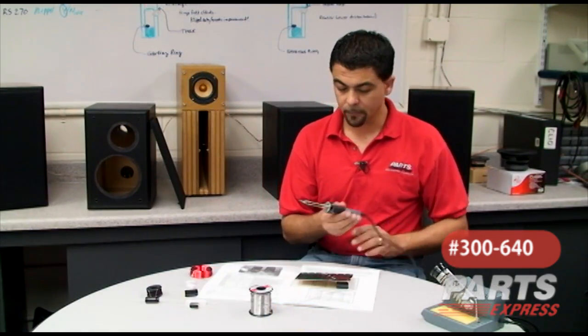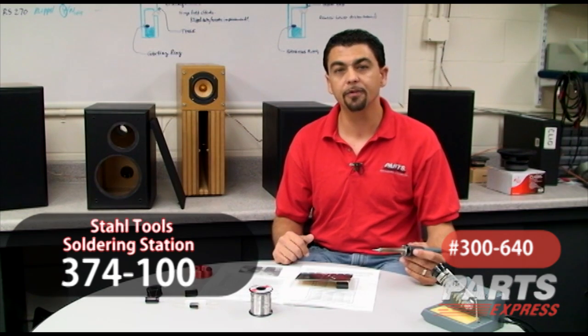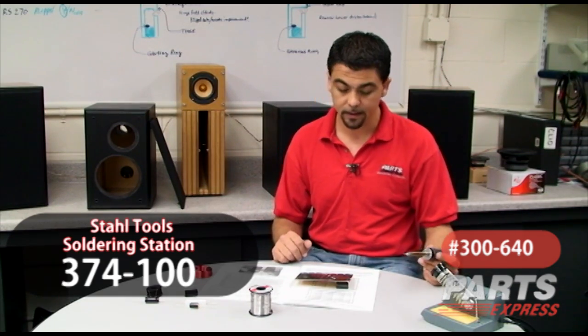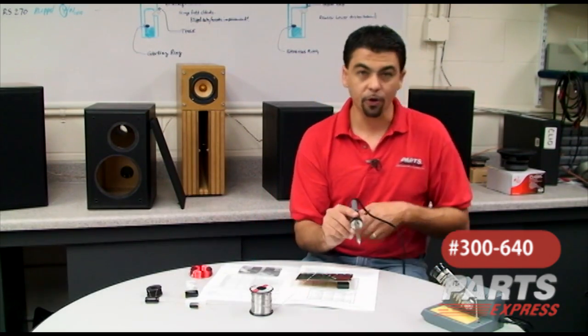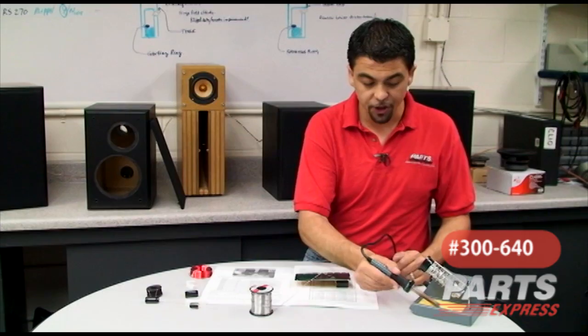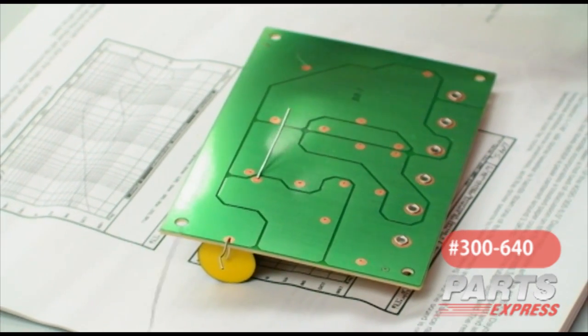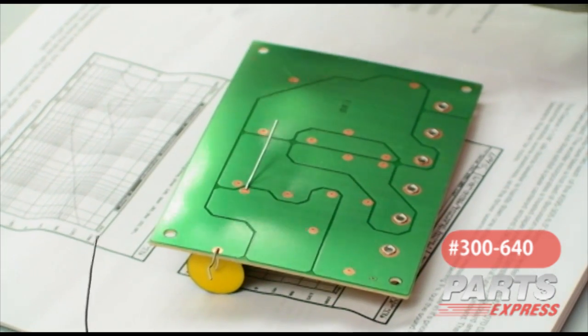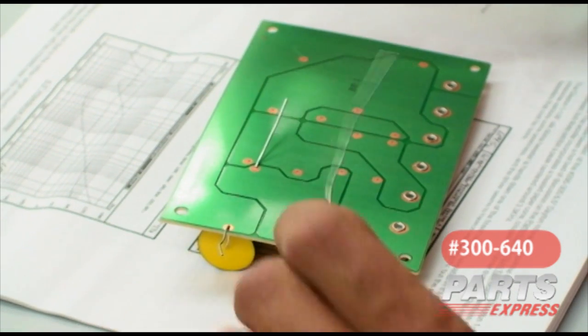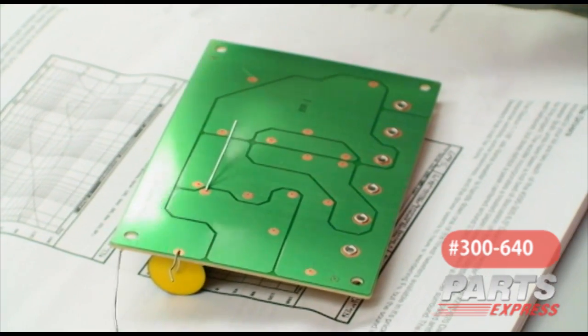Now we're ready to solder. I recommend using the Stahl Tools variable-temperature soldering iron, as it compares to soldering irons that can be up to 10 times its actual price. We have replacement tips, and it comes pre-tinned, so you're ready to go right out of the box. Before soldering, always make sure you have a sponge that's wet. What this is going to do is keep your tip clean, nice and shiny, for a good soldering connection.